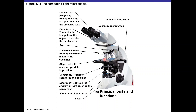The objective lenses come in several sizes and magnify the image at different levels. Below the stage is the condenser lens, which gathers the light and directs it through the glass slide and into the objective lens. Below the condenser is the diaphragm, which allows you to reduce or increase the amount of light passing through the condenser to improve sharpness and contrast.